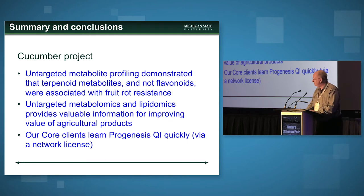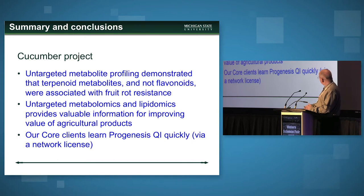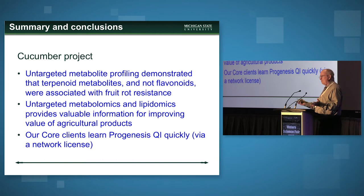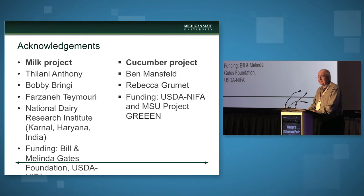To summarize: it is useful to do untargeted metabolite profiling even for those who think they know what they're measuring. Untargeted metabolomics and lipidomics provides a lot of valuable information in the context of developing and improving agricultural products. The core I run has roughly 200 users, and we're constantly training new people to use Progenesis. We give them options of Progenesis or open-source software, but the overwhelming majority find Progenesis very easy to use.